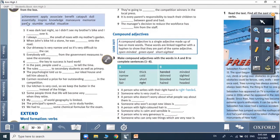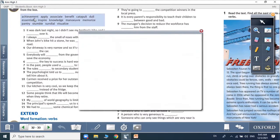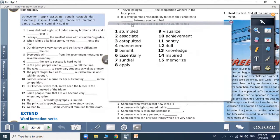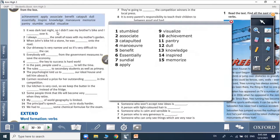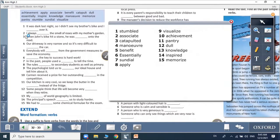Now, here we want to use these words in the correct space. Number one, it was dark last night, so I didn't see my brother's bike, and I stumbled. Number two, I always associate the smell of roses with my mother's garden. Number three, when John's bike hit a stone he was catapulted into the road. Number four, our driveway is very narrow and so it's very difficult to maneuver the car.